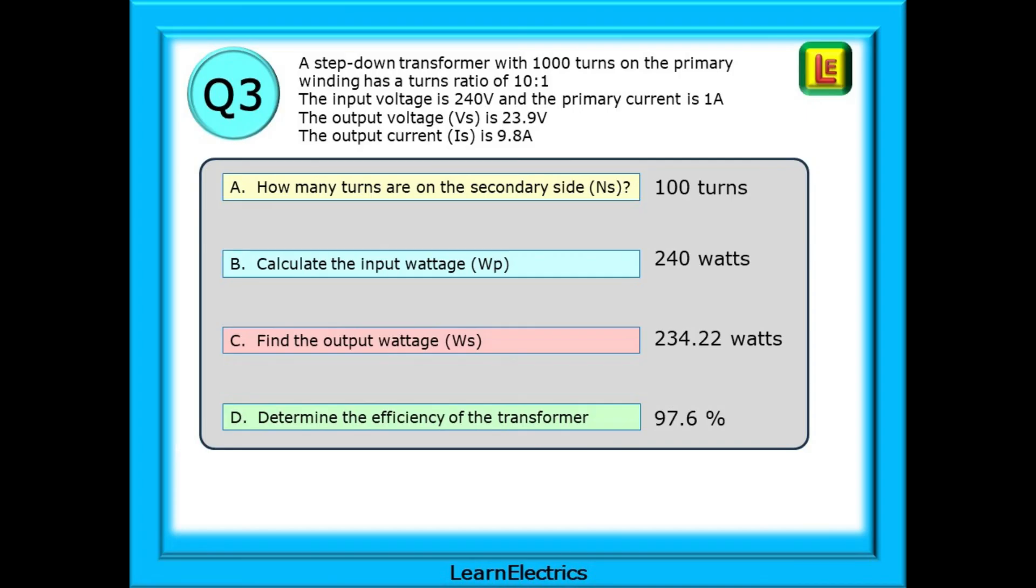Part C, find the output wattage WS which is 234.22 watts. And part D, determine the efficiency of the transformer and this is 0.976 or 97.6% efficiency.